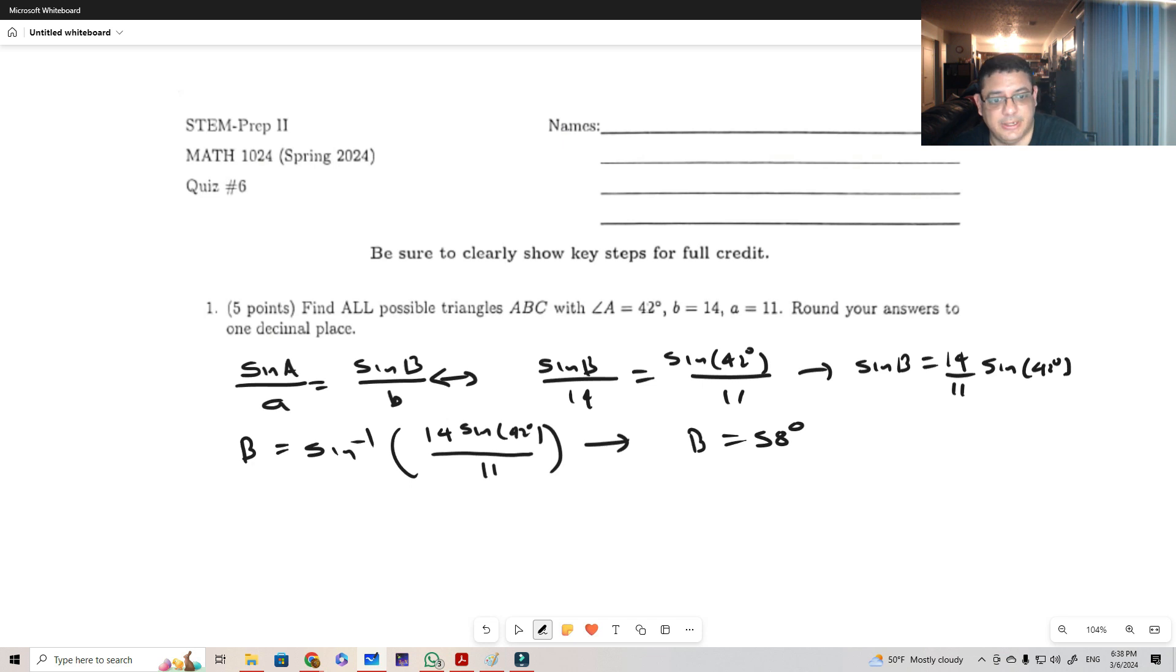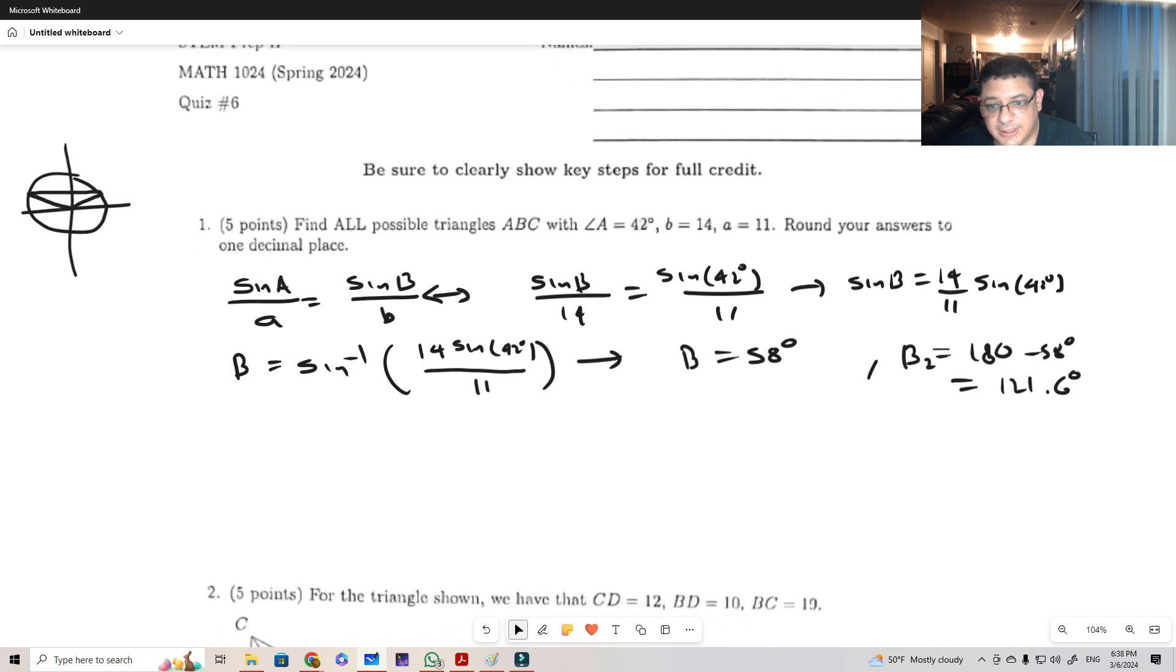Now we've got to check the possibility of a second angle. Because this is a sine and we're looking for angles that are less than 180, we'll look for an angle on the second quadrant. Remember we're looking for sine of B as a positive number. The first angle 58 is here, the second angle is going to be here. So to find the second angle, B2 is going to be 180 minus 58, and so that's going to give me 121.6. So with this I can get likely two triangles.